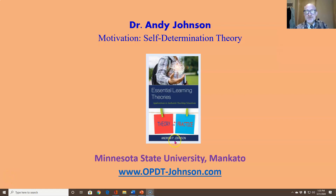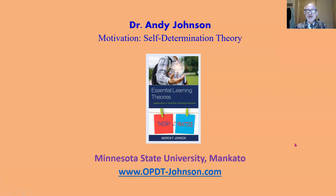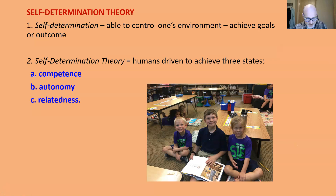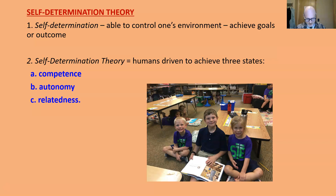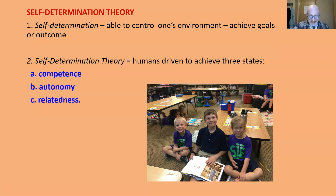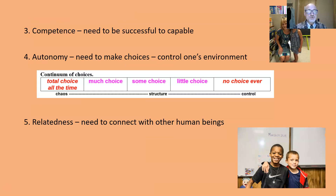We are looking at motivation in terms of self-determination theory. Self-determination means you are able to control your environment in order to achieve the desired goal or outcome. Self-determination theory says that humans are driven to achieve three states: competence, autonomy, and relatedness. That is a theory of human motivation. We'll look at each one of these.